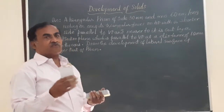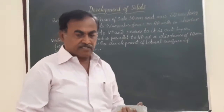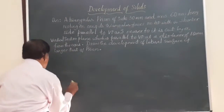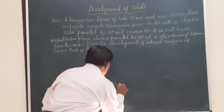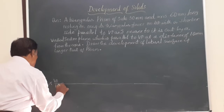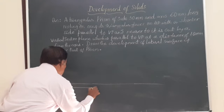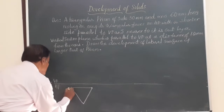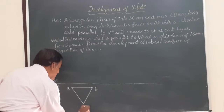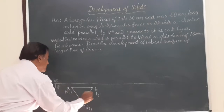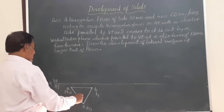Let me draw the front view and top view of the solid when it is resting with one of the rectangular faces parallel to VP and nearer to it. Mark the XY line, then mark VP/HP to indicate the first angle projection. Mark a triangle indicating the top view of the triangular prism where one of the shorter edges, AB, is nearer to VP. Mark C1, B1, and each of these sides measures 30 mm.